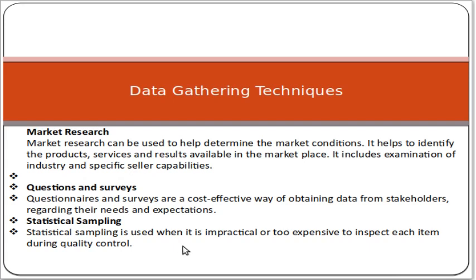Statistical sampling is used when it is impractical or too expensive to inspect each item during quality control. For example, if there are 20,000 items in a product that you want to check, you can take 1,000 or 1,500 samples and perform a quality check on that sample. This is the concept of statistical sampling.